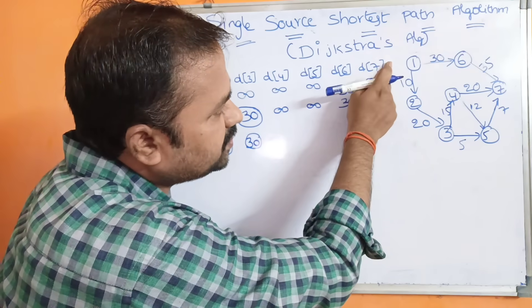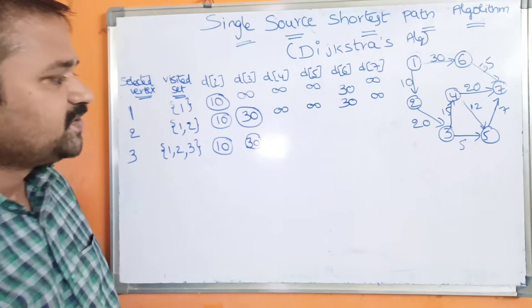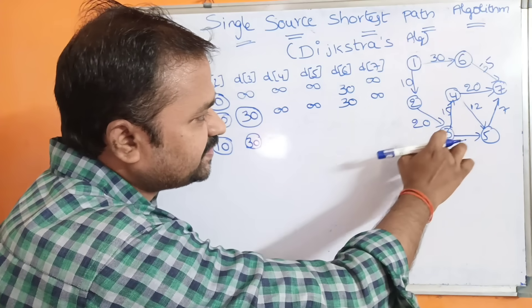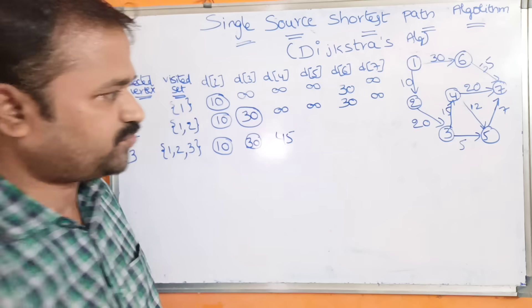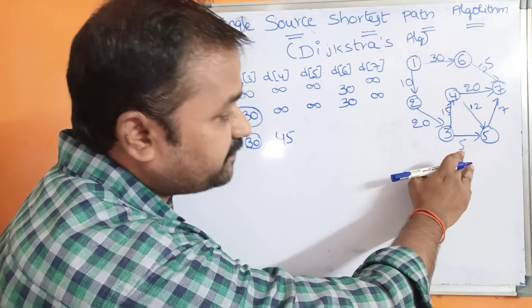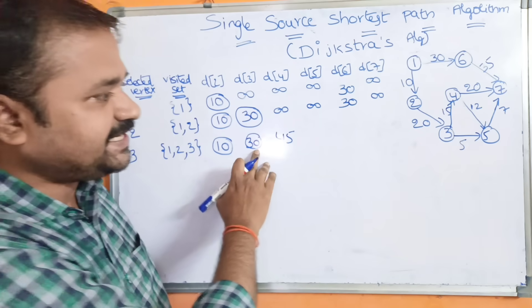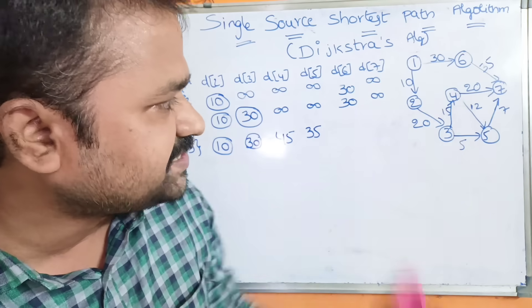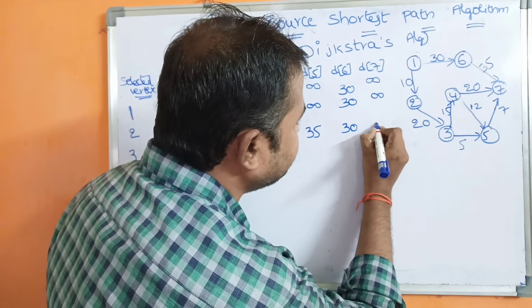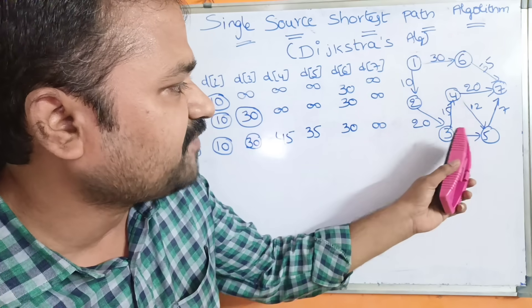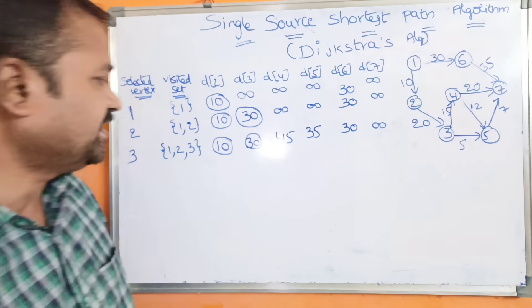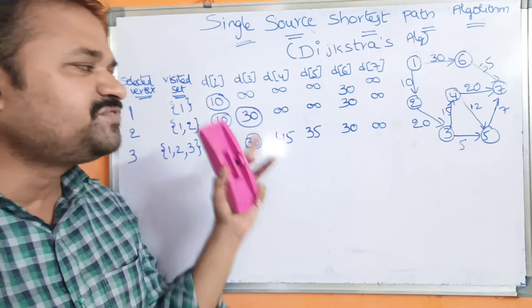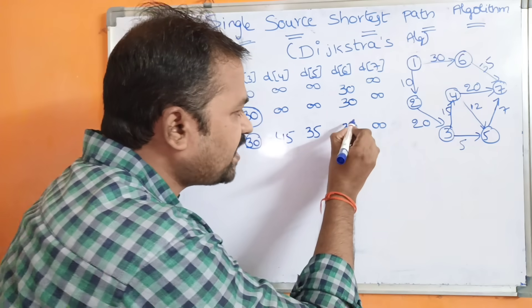We need to find the cost from 1 to 4 and from 1 to 5. For cost of 4: cost of 3 is 30, plus edge 3 to 4 is 15, so 30 + 15 = 45. For cost of 5: cost of 3 is 30, plus edge 3 to 5 is 5, so 30 + 5 = 35. No other edges from 3, so remaining costs stay as before. Now we select the next vertex from costs 45, 35, 30, infinity. The minimum is 30, which is the cost of vertex 6.